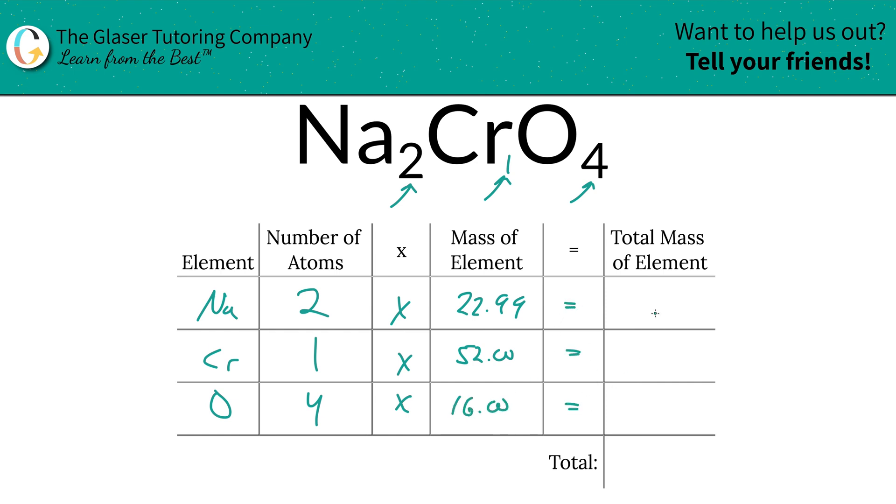Then to find the total mass of the elements in the compound, for sodium, simply multiply this row across. So that's going to be 45.98 units of mass. Chromium is simply 52, and then oxygen is going to be 64.